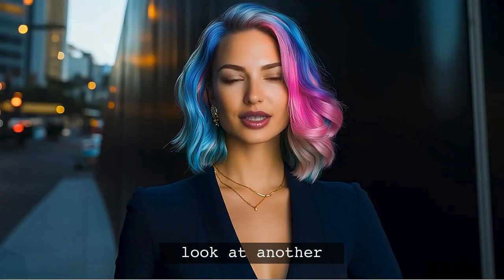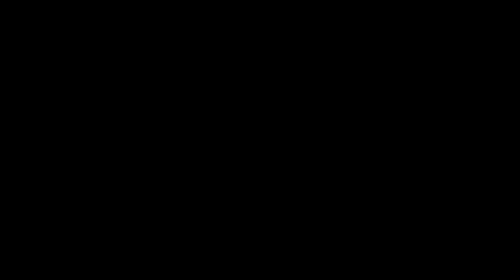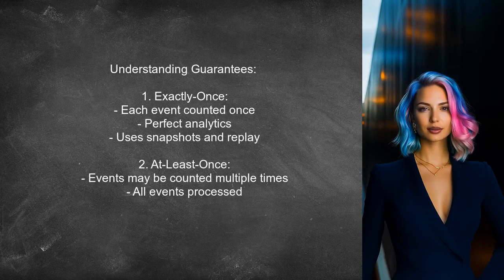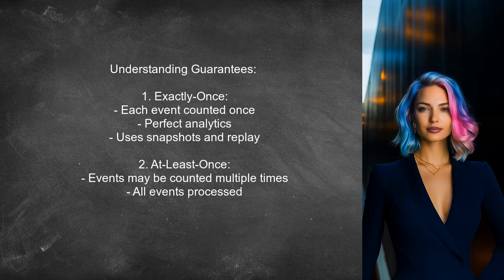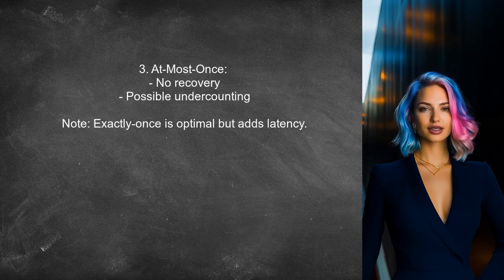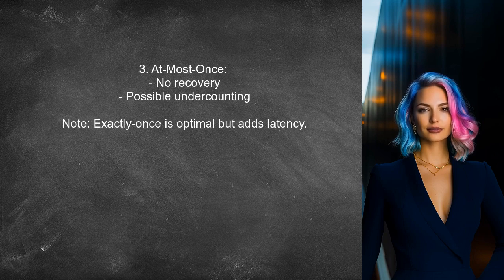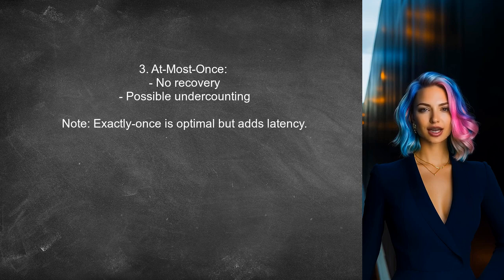Another user explains the difference in the context of event processing. With exactly once guarantees, each event is counted accurately, ensuring perfect analytics even during failures — Flink achieves this through consistent snapshots and stream replay. At least once may result in some events being counted multiple times if a failure occurs, but every event will be processed. At most once can lead to undercounting since there is no recovery mechanism. While exactly once is optimal for correctness and fault tolerance, it does introduce some latency.